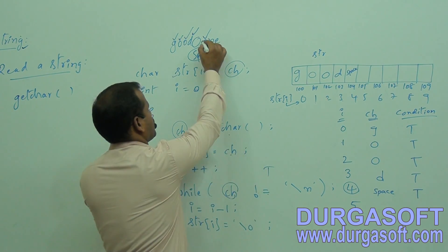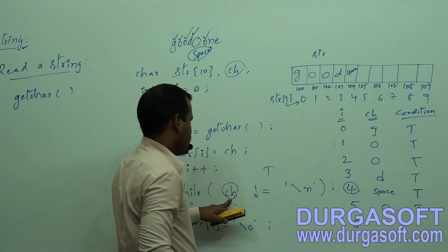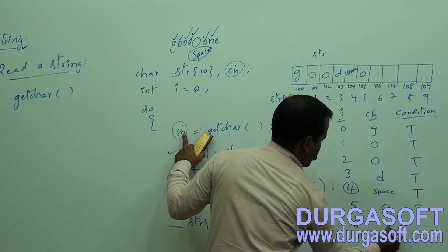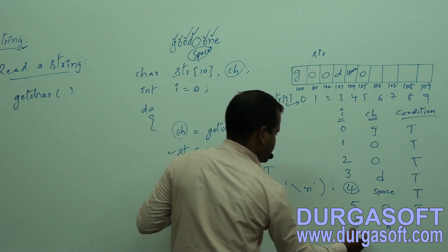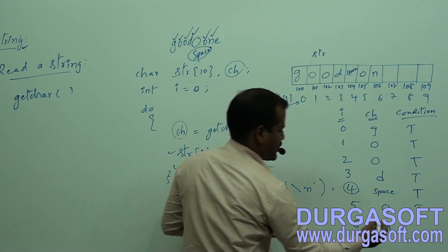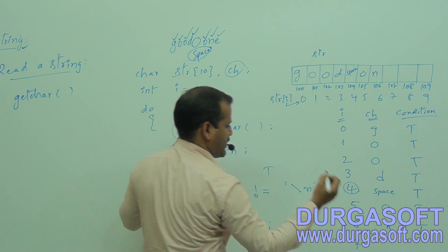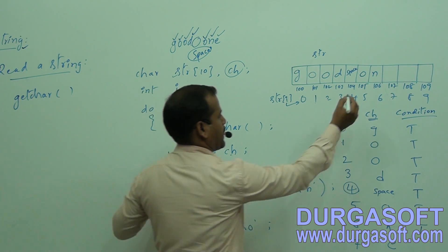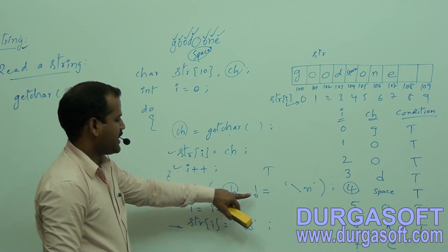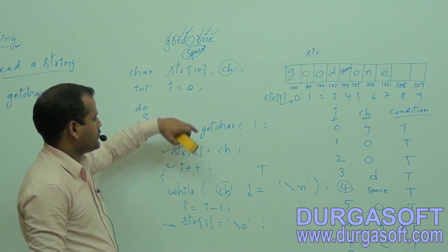The next character 'o' is taken into ch, i is incremented, condition is checked — true again. The do segment repeats, and ch is now 'n'. 'o' is stored, then 'n' is stored with i incremented to 7. The condition: 'n' is not equal to newline, so true. The do segment repeats again. ch now takes the last character 'e'. 'e' is stored in the string, then i is incremented to 8. The condition: 'e' is not equal to newline, so condition is still true.